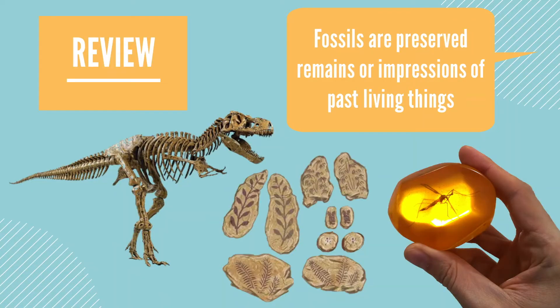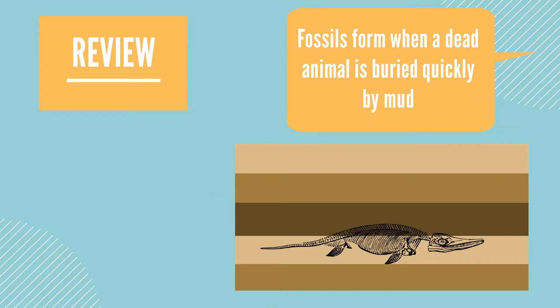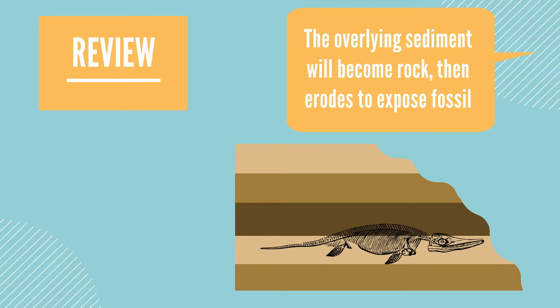Let's review what we learned in this video. We learned that fossils are preserved remains or impressions of past living things. A fossil forms when an animal dies and is buried very quickly by mud or sediment. Over time, the overlying sediment will compact and turn into rock, preserving the dead animal. Later, sediment can be eroded and expose the fossil at the surface for scientists to discover. Fossils can be thousands to millions of years old and tell us a lot about past or prehistoric environments.